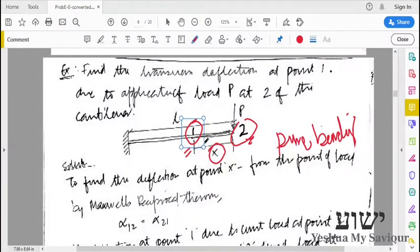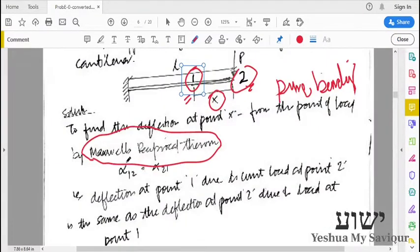So the best way to do this is by using Maxwell's Reciprocal theorem. That is, if we have a load at point 2 and we want to find the deflection at point 1, we use the influence number alpha 1,2, where alpha 1,2 is the deflection at point 1 due to load at point 2.